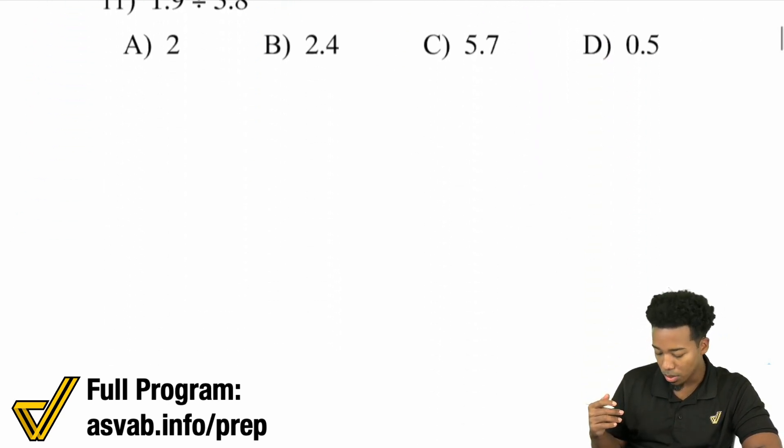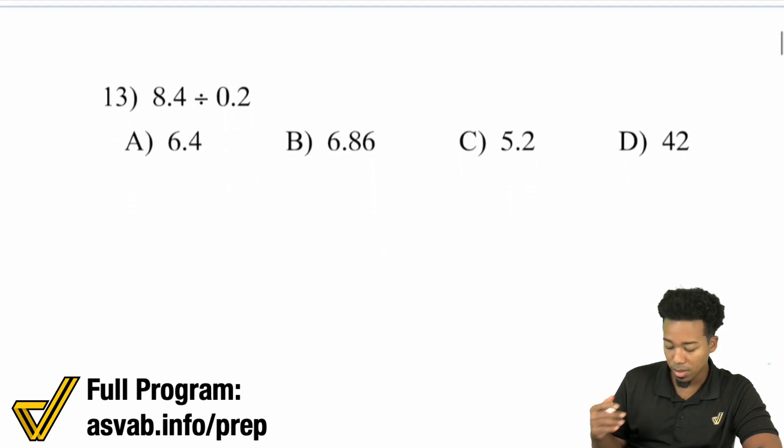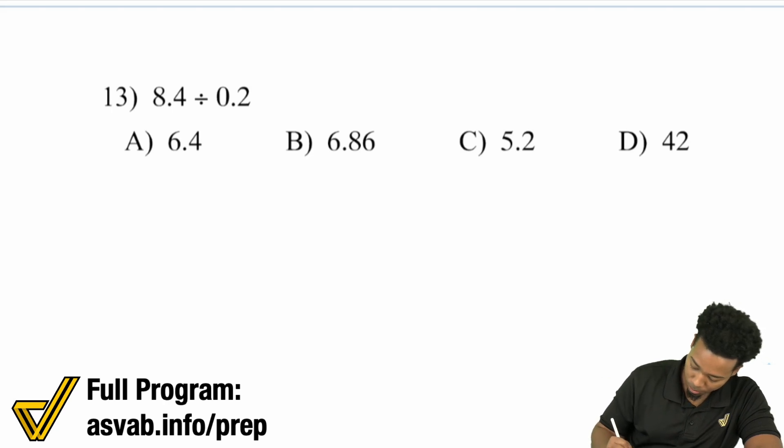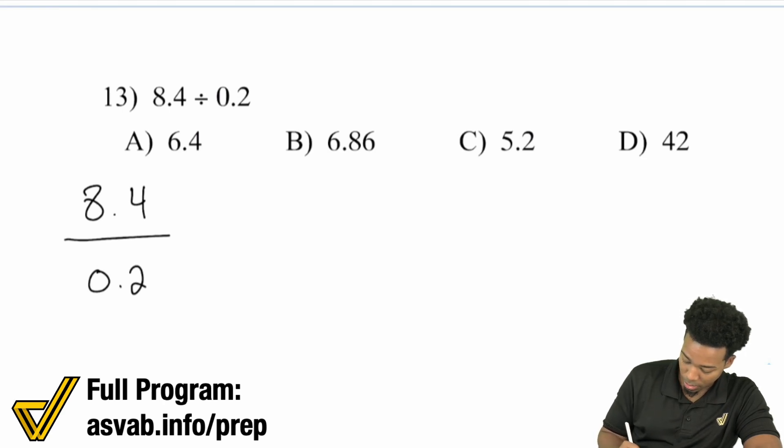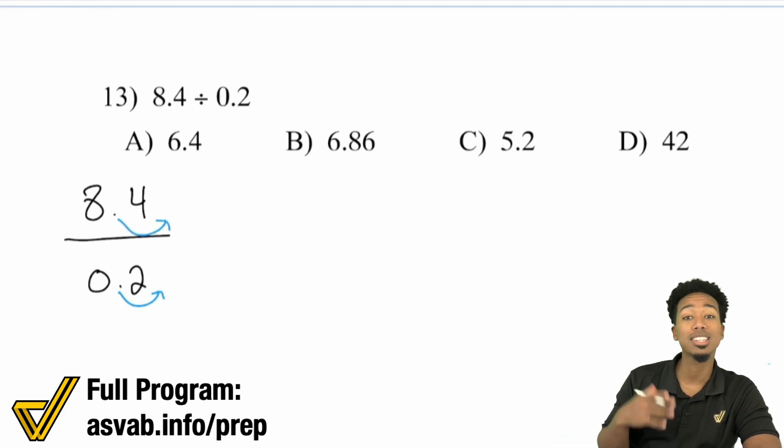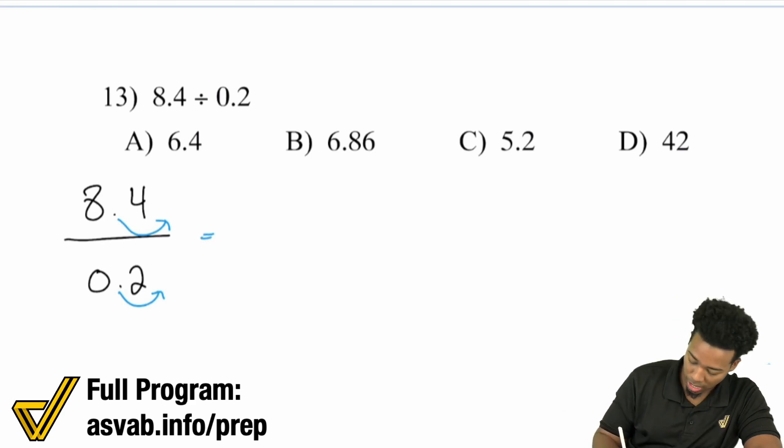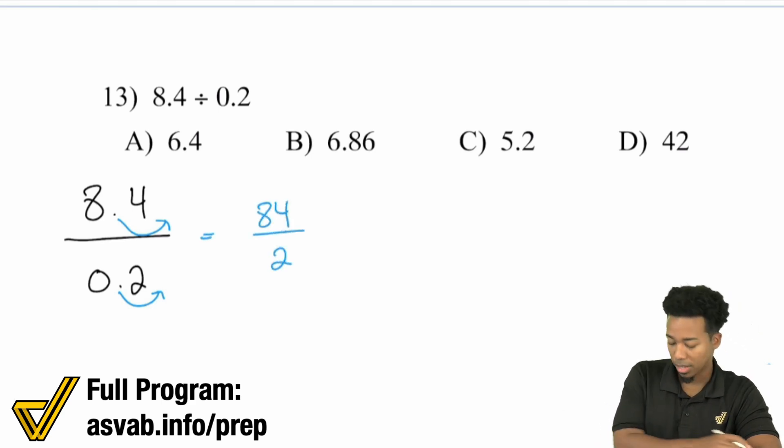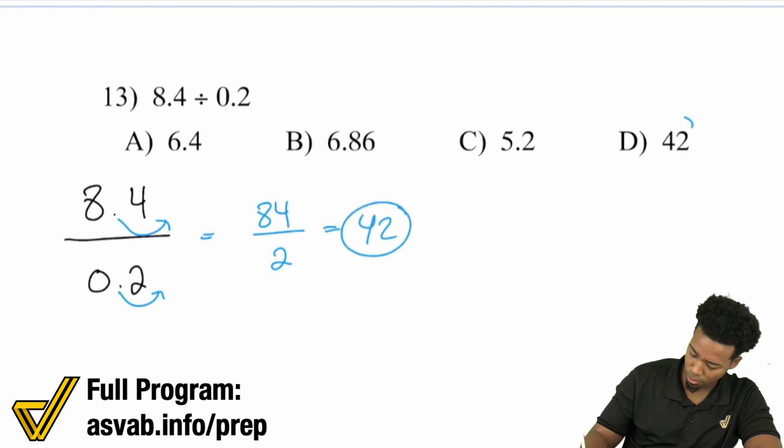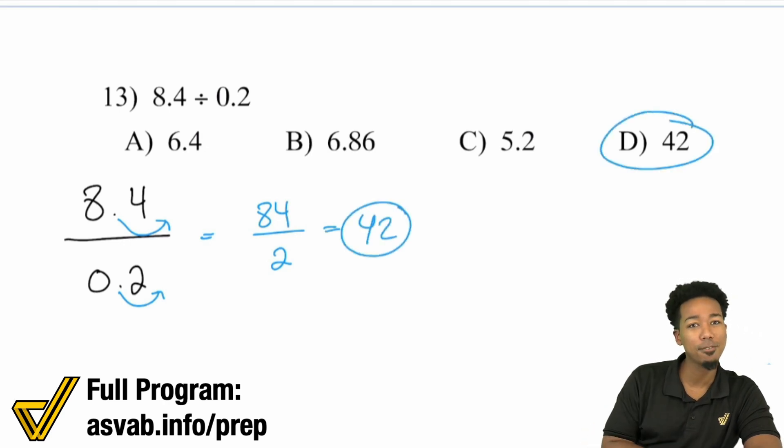And you're good. Again, the only rule we have to consider is we don't want to divide by a decimal. So if you're looking at 8.4 divided by 0.2, I don't want to divide by a decimal. So this right here, move it away, multiply by 10, or just move the decimal place over. And you've got to do the same thing over here. And what you're looking at is 84 divided by 2. And we can actually do that in our heads. 84 divided by 2, that's 42.